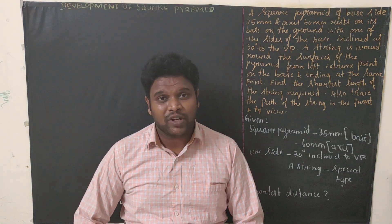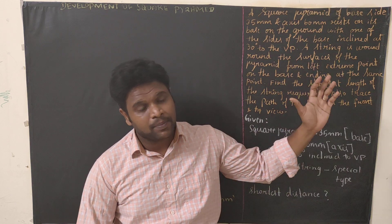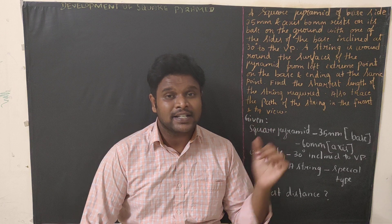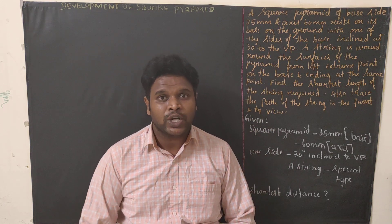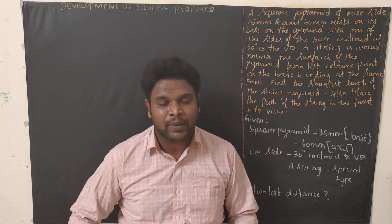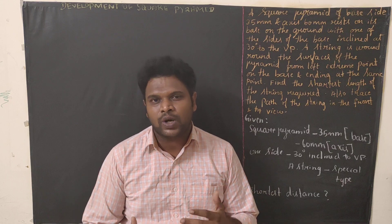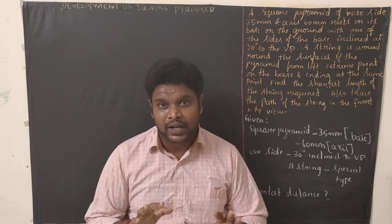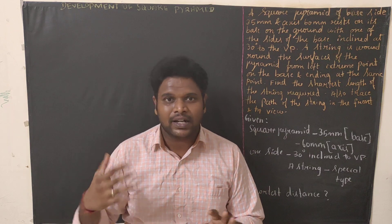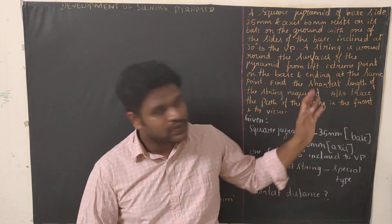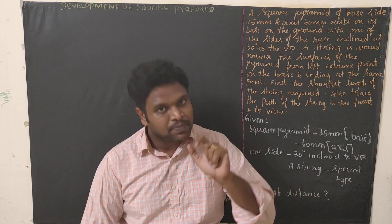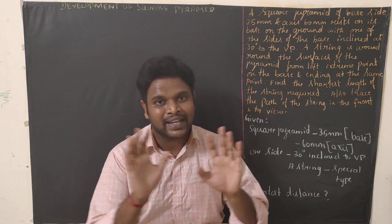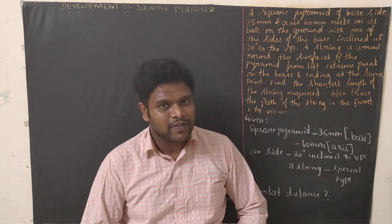Hello friends, welcome to our channel Mechanical Motivator. In this video we're going to see a problem on development of a square pyramid. This is a special type of problem where we're going to see the string wound around the pyramid. Previously we saw three to four basic problems under parallel line method and radial line method. This one is special because we're winding a string around the square pyramid.